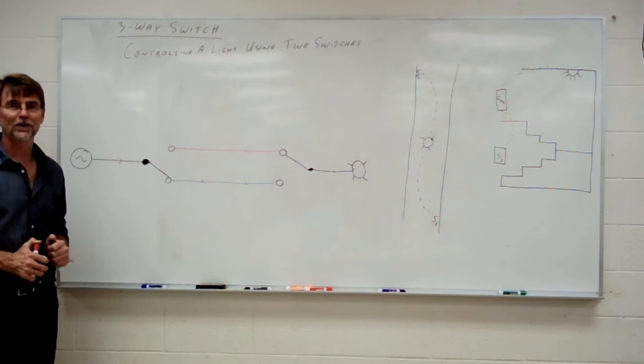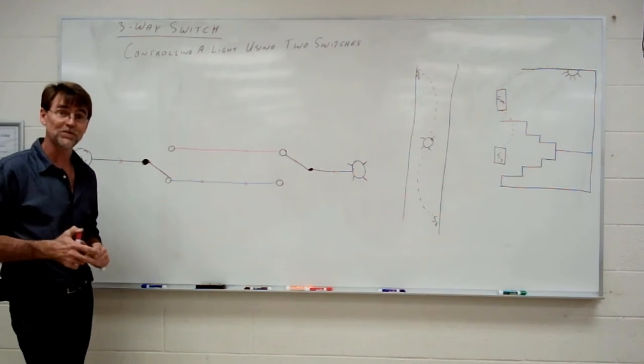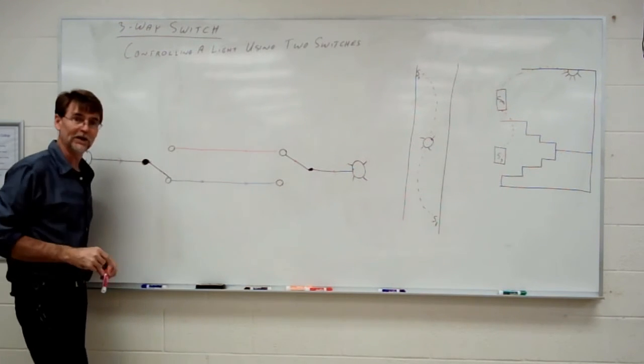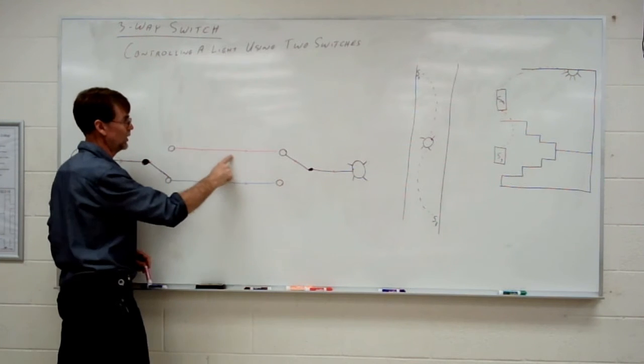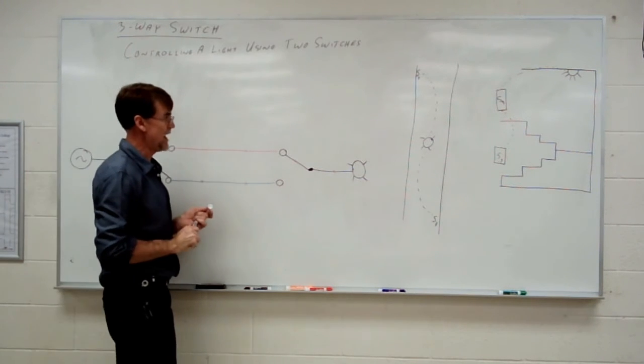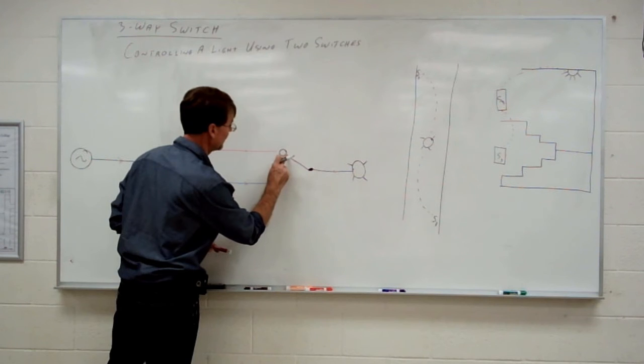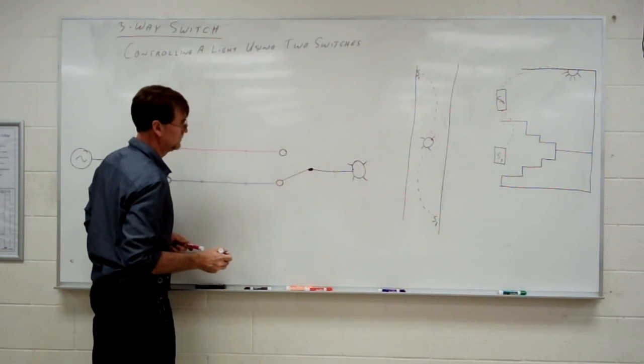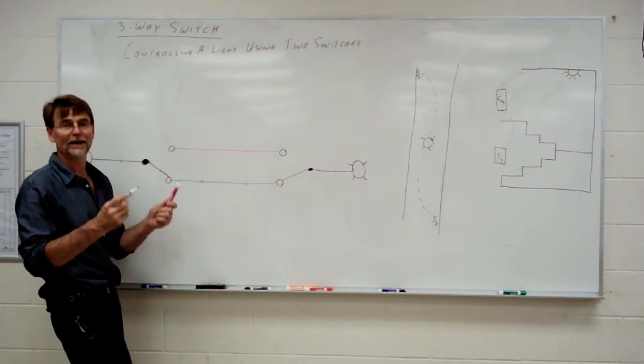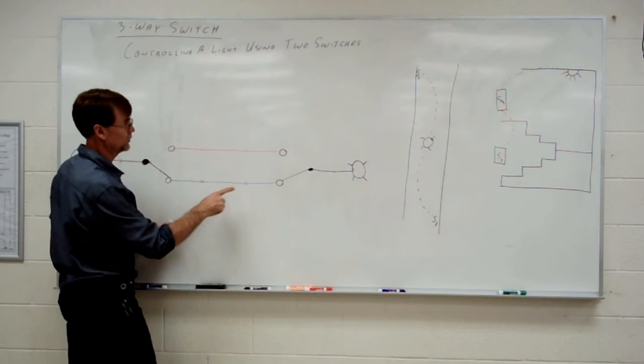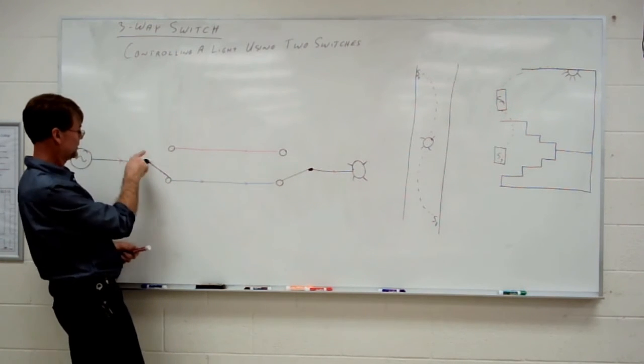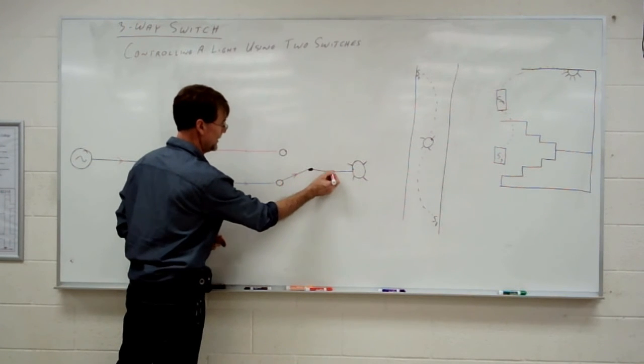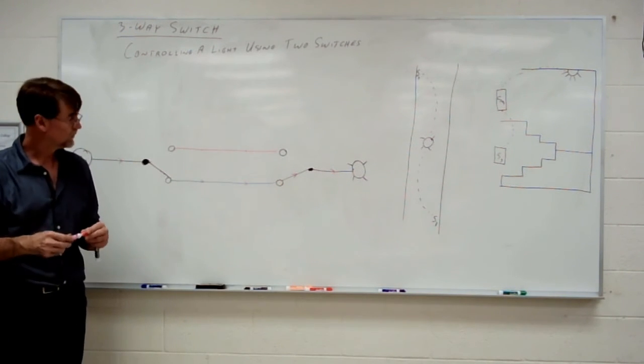So now the question is, how do I turn the light back on again? And there are two options. I could hit this switch again and we could return to our original scenario. Feeding the light through our red traveler. Or, if I've now gone to the other end of the hall and I want to turn the light off because it's time to go to bed. I hit the other switch at the other end of the hall. Oh, no. I'm turning the light back on. So I guess I've got to get up in the middle of the night or something. Turn the light back on. Here we go. So we already had current here in the blue traveler. Now we have a complete circuit there and the light comes back on.